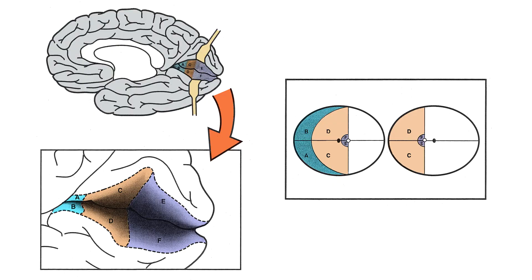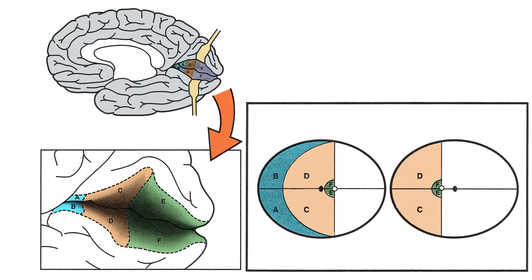The visual field is represented in primary visual cortex along the calcarine fissure, which extends from the parietal occipital fissure to the tip of the occipital lobe posteriorly. The posterior 50% of the primary visual cortex gathers visual signals from the central 10 degrees of the visual field — this expansive representation is called the magnification factor, underscoring the importance of foveal vision in primates. The mid portion of the visual field, from 10 to 60 degrees eccentrically, is mapped onto the midsection of primary visual cortex.